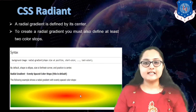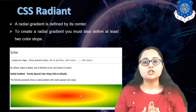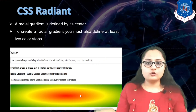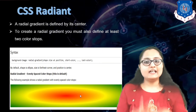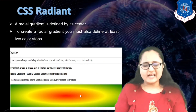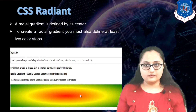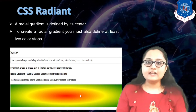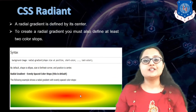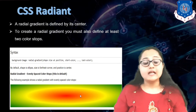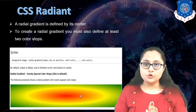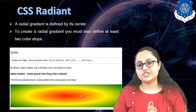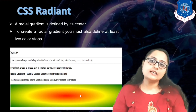Here you can see an example showing the default format of a radial gradient. It starts from the center and follows the transition of the colors you have specified. It looks like an ellipse — you can visually see the ellipse shape, and within it the transition from red in the center to green on the outside is a very smooth transition.